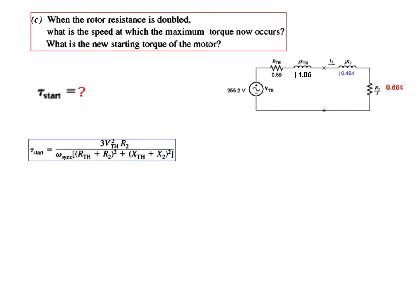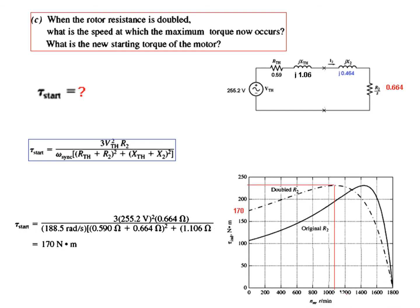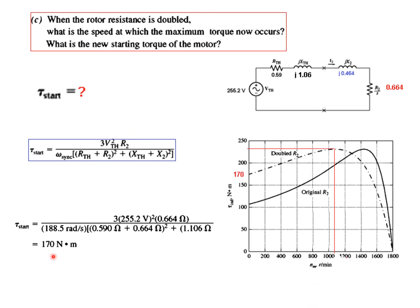Now, what is the starting torque? This was the formula for starting torque. Plugging in the values, we get 170 newton-meters. From this graph for the doubled R2, you can see that the starting torque is 170 when the speed is zero.